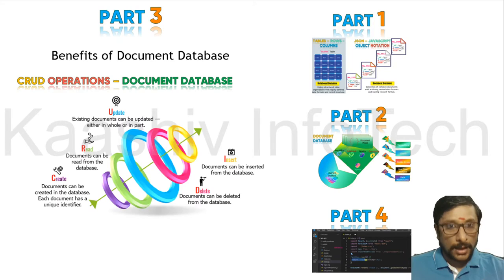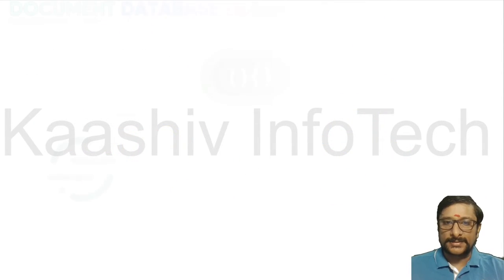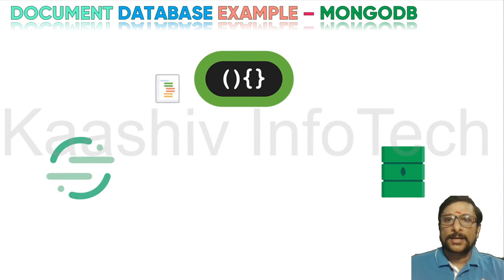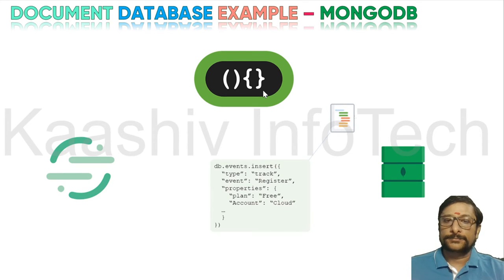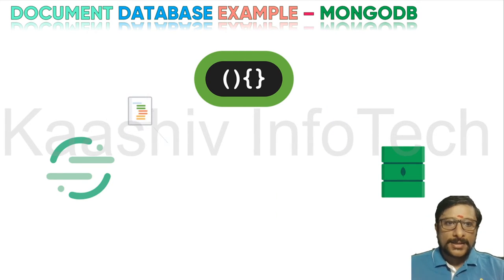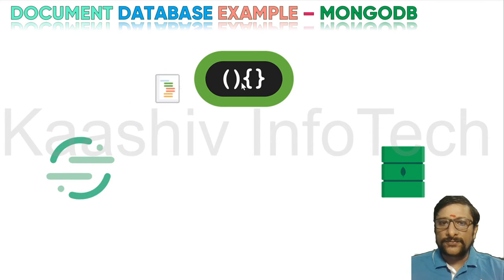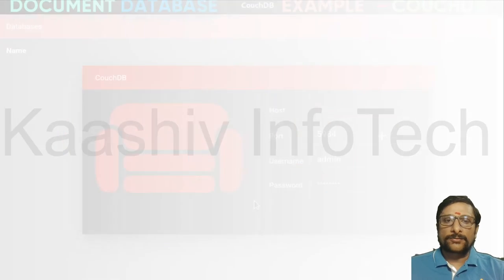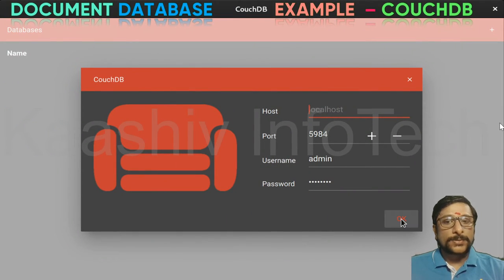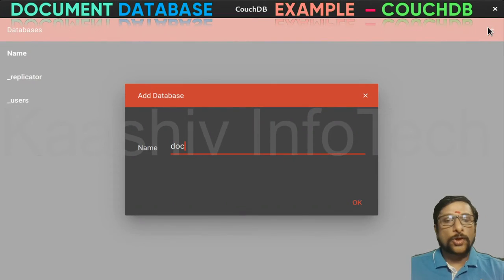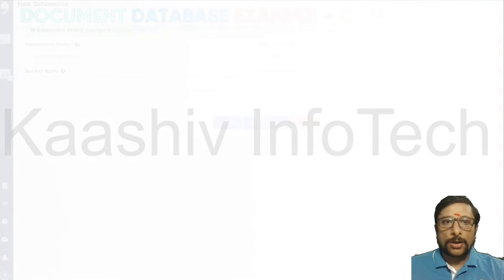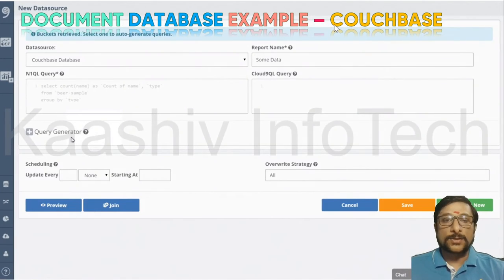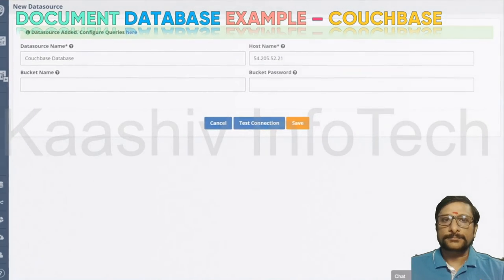Let's move on to part 3 — the benefits of document database. First, let me talk about examples of document databases. MongoDB is one very powerful software — my next video is on MongoDB. All your document data is converted to JSON format and stored there — that is how MongoDB works. The second one is CouchDB, another powerful document database. And there is also CouchBase, which is another very good example of a document database.